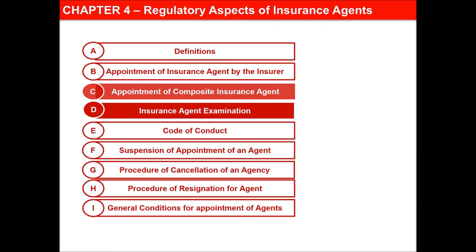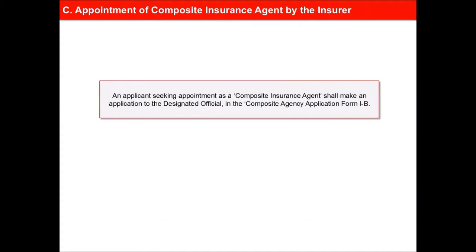An applicant seeking appointment as a Composite Insurance Agent shall make an application to the designated official of respective life, general, health insurer or monoline insurer, as the case may be, in the Composite Agency Application Form 1B.